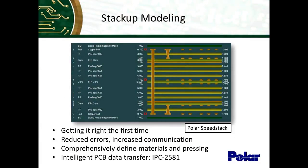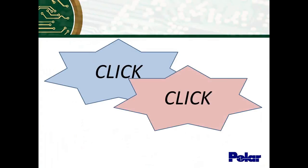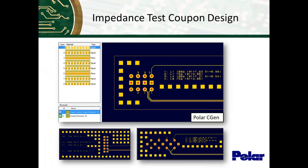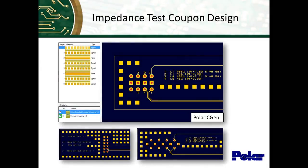Okay, next, we are going to talk about coupons. Now, has anyone out there had to design an impedance coupon? Well, if you have, you may know that it can be time-consuming depending on how you do it, and error-prone. So what I'm going to do is take this stack. We've got an eight-layer stack here with four controlled impedance traces specified. And in just four clicks, click, click, click, click, we can automatically generate the coupon with Polar Cgen tool.